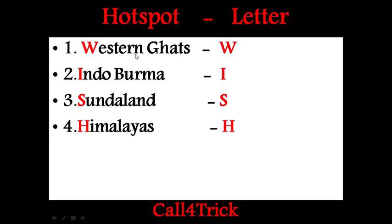So the trick is 4 names. Western Ghats is W, Indoburma is I, Sundaland is S, Himalayas is H.